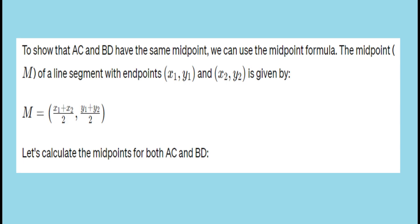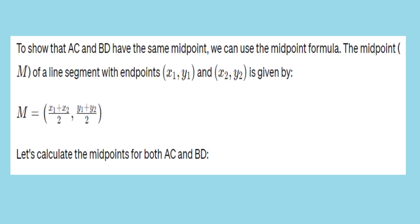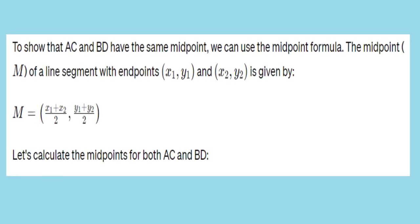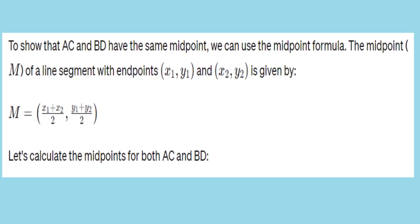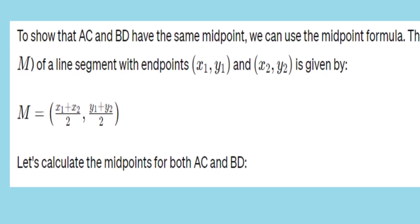Solution 1: To show that the midpoints of diagonals AC and BD are the same, we can calculate the midpoint of each diagonal and demonstrate their equality. The midpoint formula for a line segment with endpoints (x1, y1) and (x2, y2) is given by: midpoint = ((x1 + x2)/2, (y1 + y2)/2). Let's calculate the midpoints for the diagonals AC and BD.